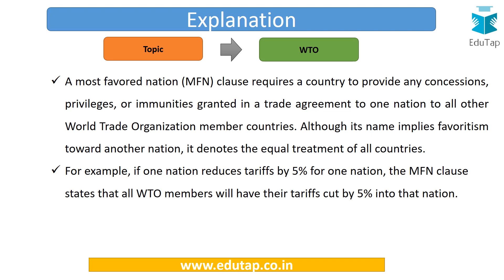Although the name implies favoritism towards another nation, Most Favored Nation actually denotes equal treatment to all countries — this is the irony. You might be surprised to know that India has given the Most Favored Nation tag to Pakistan also, since Pakistan is also a member of WTO.